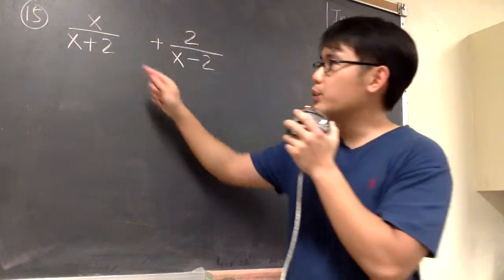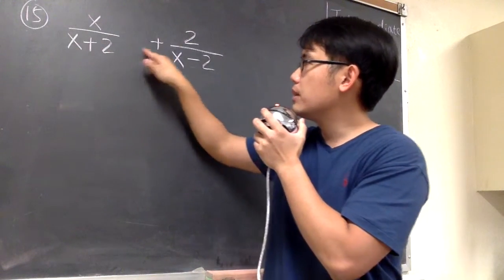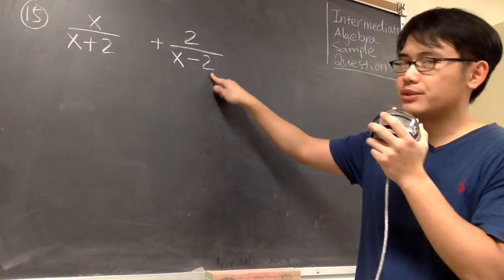Number 15, last question. Here we have x over x plus 2 plus 2 over x minus 2.